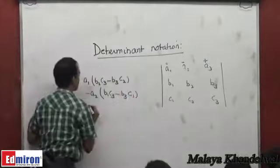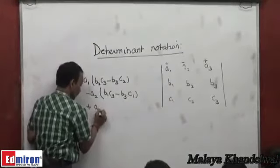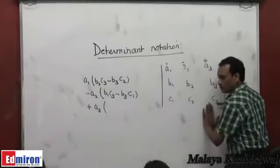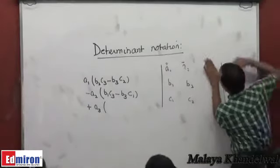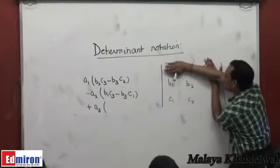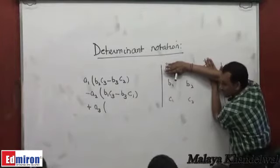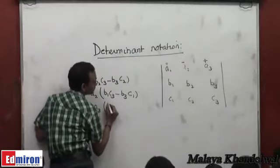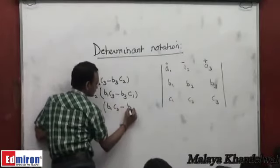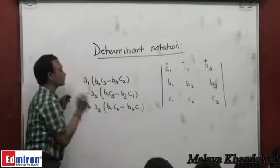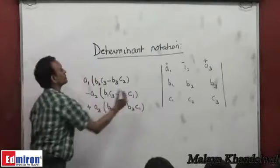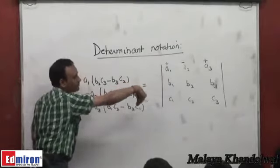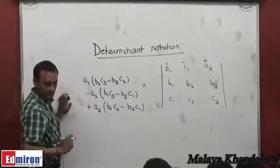And then plus a3 into, again this belongs to this column and belongs to this row. Hide the row and column to which this belongs. The remaining elements are b1 c2 minus b2 c1. That's the value of this determinant. That's the value of a collection of numbers given in the form of what we call a determinant.